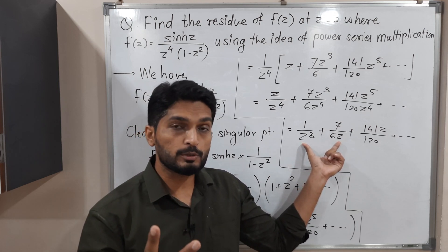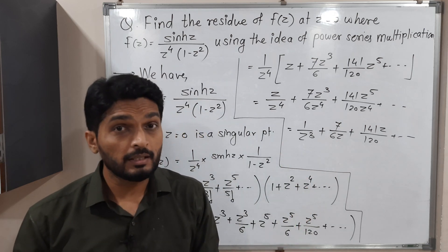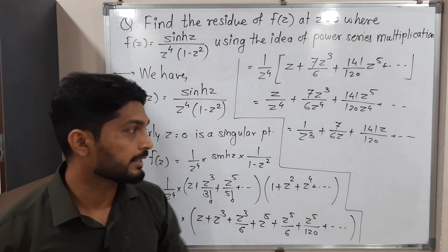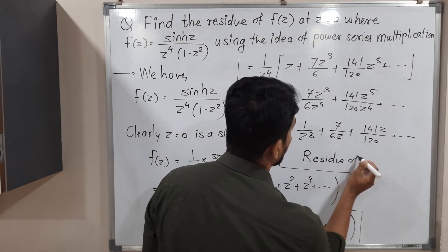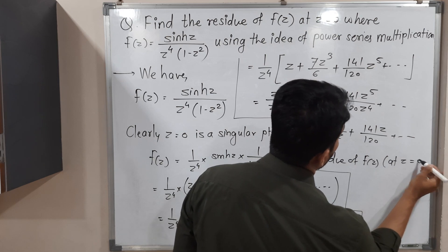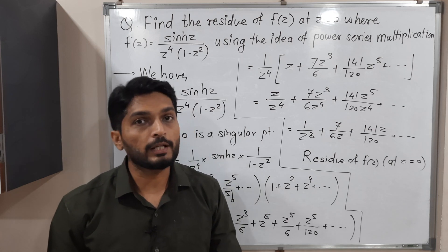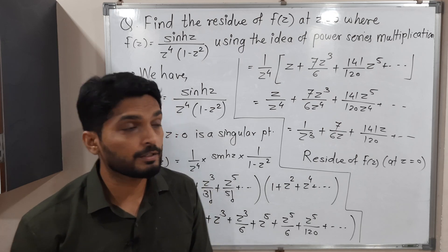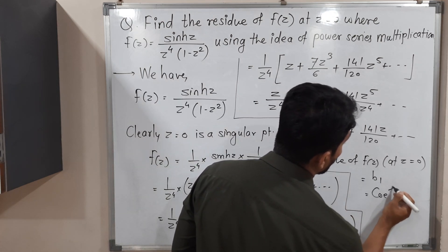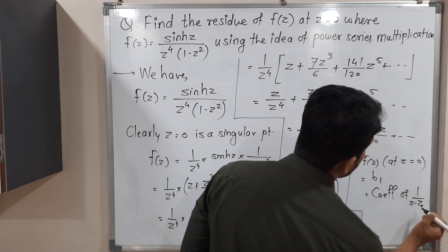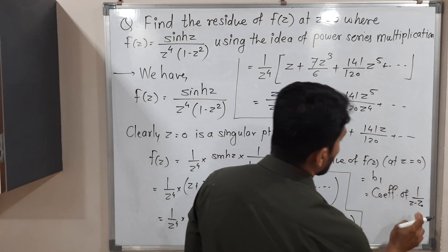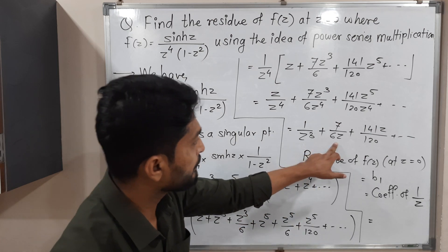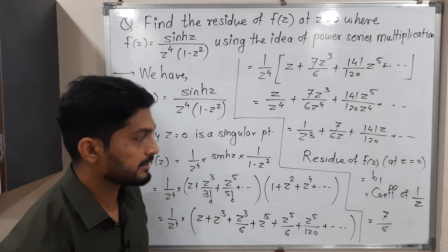The principal part has only two terms, so it is a pole and its power is 3, meaning it is a pole of order 3. In this example we are more interested in the residue. Residue of f(z) at z = 0: by the definition of residue, the residue is b₁, i.e., the coefficient of 1 over (z minus z₀) in the Laurent series expansion. Here z₀ = 0, so residue is the coefficient of 1/z, which is 7/6. This is the required residue.